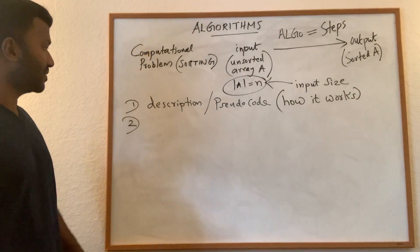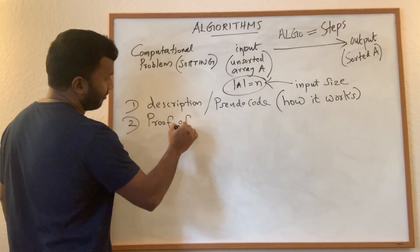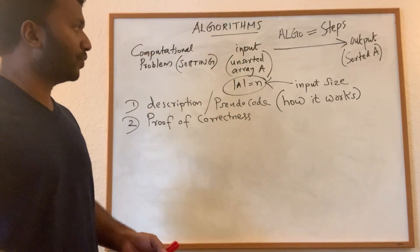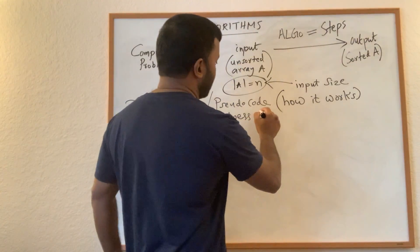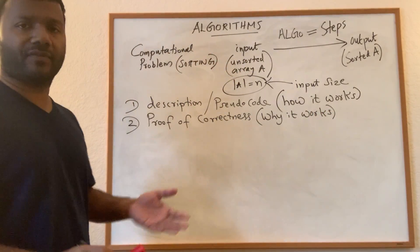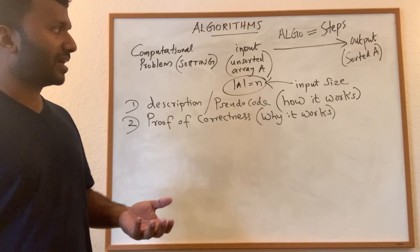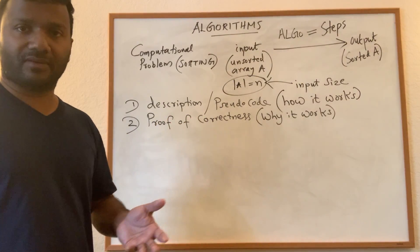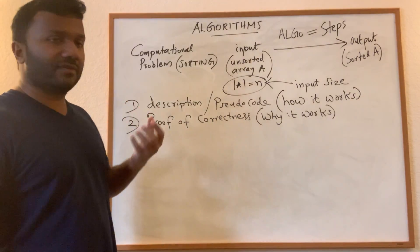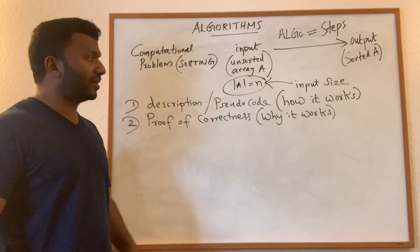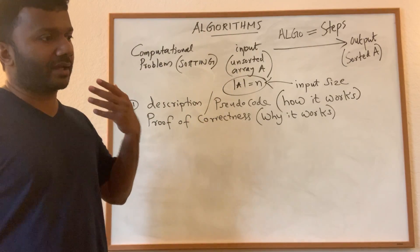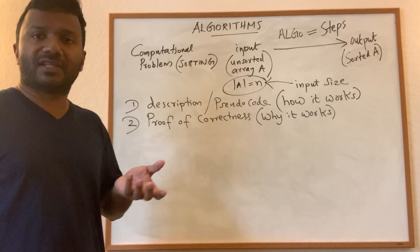The second component of an algorithm is known as the proof of correctness. So proof of correctness tells you why it works. In the case of some algorithms this proof of correctness might be obvious, but in some cases you know we will have no clue by reading the steps. There will be some bunch of steps and magically this will work. So in that case we have to give a rigorous proof on why it works. Usually the techniques we use for proving the correctness is proof by induction, proof by contradiction, sometimes we use pigeonhole principle, etc.